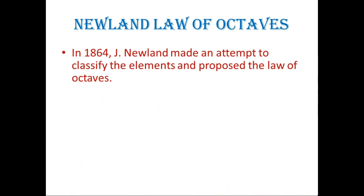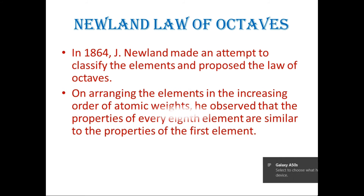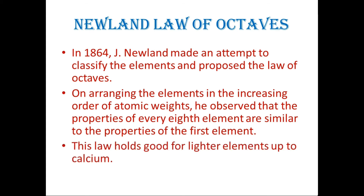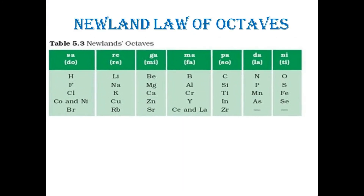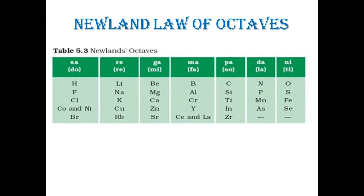In 1864, Newlands proposed the Law of Octaves. He arranged elements in increasing order of atomic weights. His idea was that the properties of every eighth element are similar to the properties of the first element — just like octaves in music. This was applicable up to calcium, but the method failed for heavier elements. This is Newlands' Law of Octaves. Next, we will look at Mendeleev's classification in our next class.